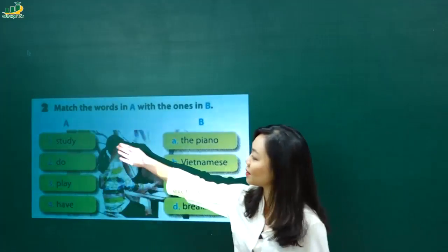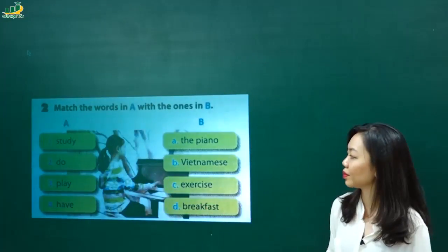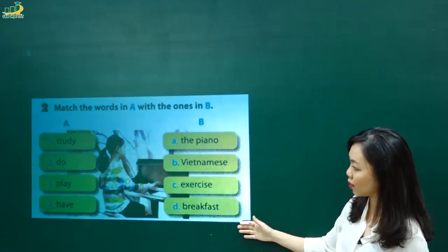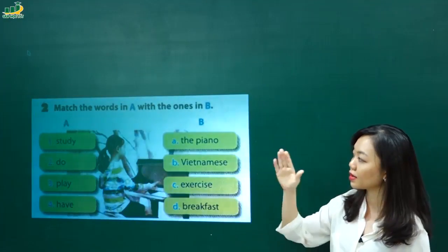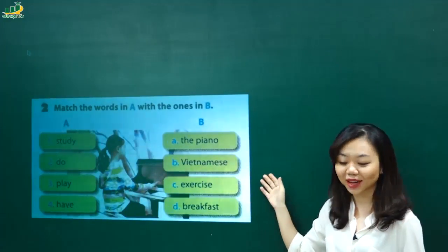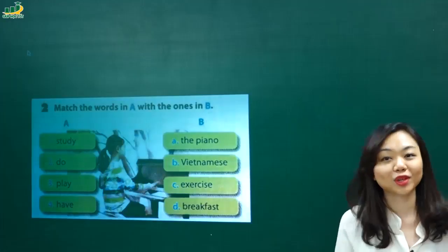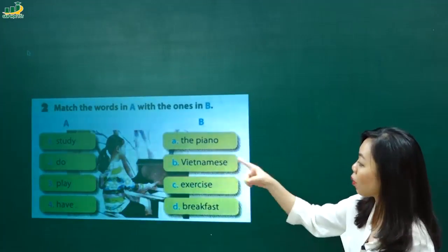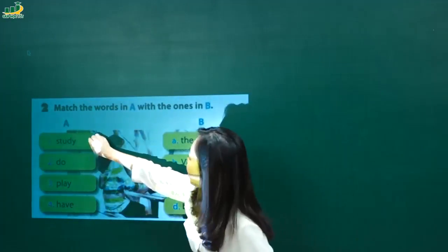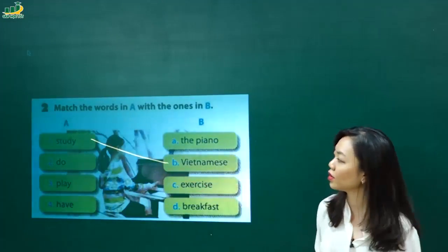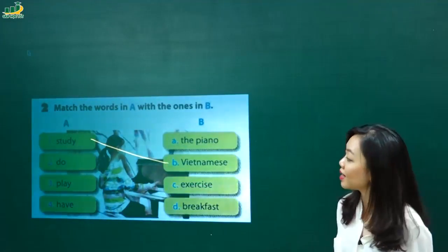Đầu tiên mình có từ study. Now study, học. Mình sẽ nói học cái gì trong này thì hợp lý không? À, sẽ là study Vietnamese. Các em hãy học một cái ngôn ngữ nào đó mà cụ thể ở đây nó chính là tiếng Việt đấy. Vậy one sẽ được nối với cả B. One. B. Good. Study Vietnamese. Next.